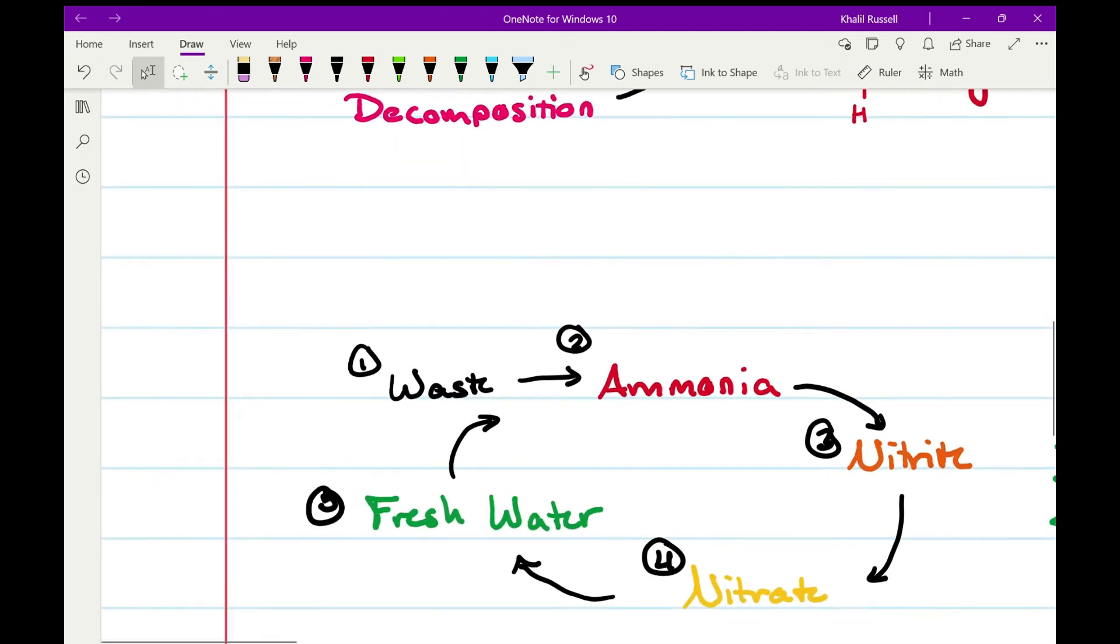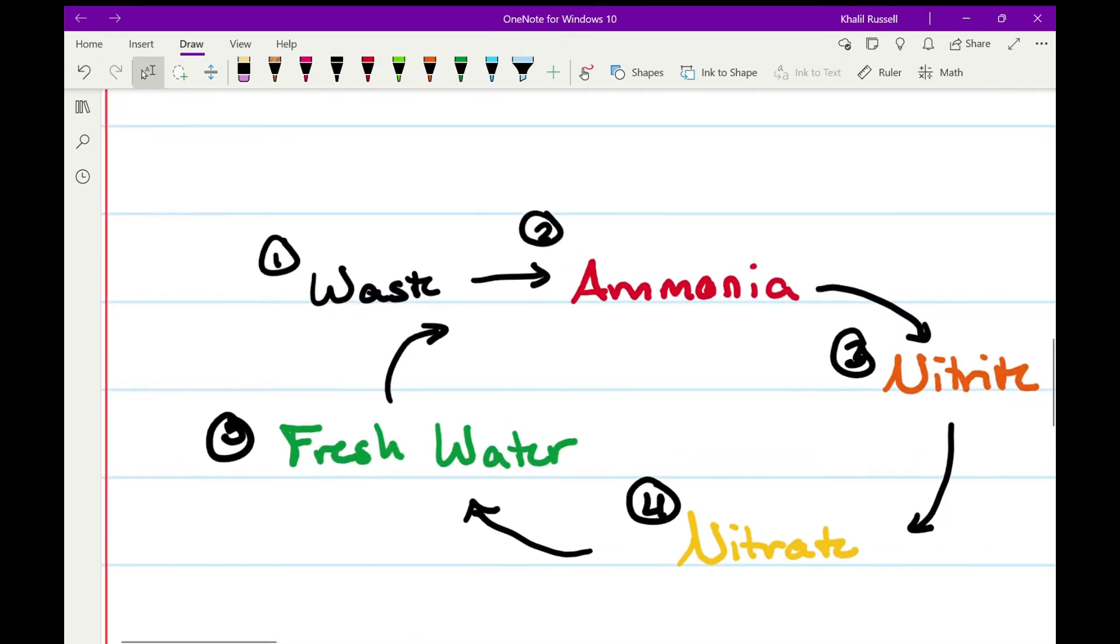So here's our summary. Step one, you have waste. Step two in the nitrogen cycle, that waste gets turned into ammonia, either directly through the fish or through decomposition. Step three, that ammonia becomes nitrites.